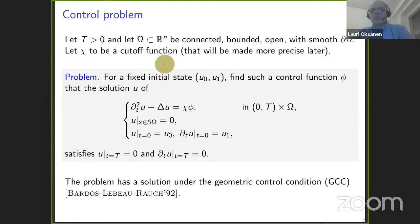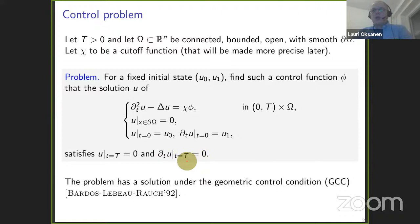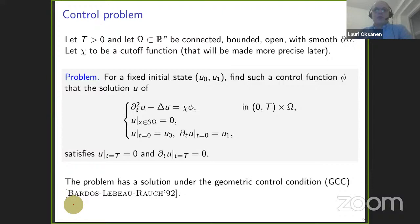The rough formulation of the problem is that we fix an initial state u0, u1, and we want to find a control function phi on the right-hand side of the wave equation, localized with this chi, such that this control drives the solution to the wave equation to the zero state at time capital T. This is a very classical problem, perfectly understood at the theoretical level. We know the problem has a solution under the geometric control condition — GCC — which goes back to the famous work of Bardos, Lebeau, and Rauch.